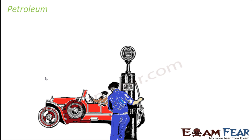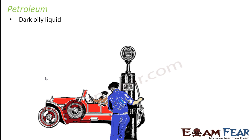We get them all from petroleum, and petroleum is, just like coal, an exhaustible natural resource. Now how does petroleum look? Unlike coal, which has a rock-like appearance, is black in colour and solid, petroleum is a liquid — a dark, oily liquid. Petroleum also has a very unpleasant smell. In fact, if you ever visit a petrol pump, you will notice that petrol has a very specific smell.